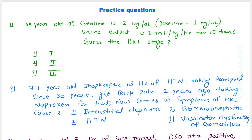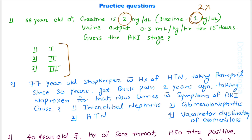First practice question: a 68-year-old male has a creatinine of 2 mg/dL, baseline is 1 mg/dL, and urine output is 0.3 ml. What AKI stage is this? Since baseline is 1 and current creatinine is 2, that's double — fitting stage 2. Urine output is also less than 0.5 ml per kg per hour for more than 12 hours. This is stage 2 AKI.